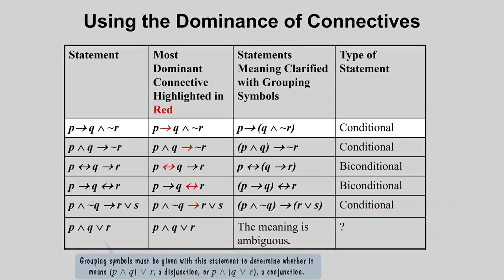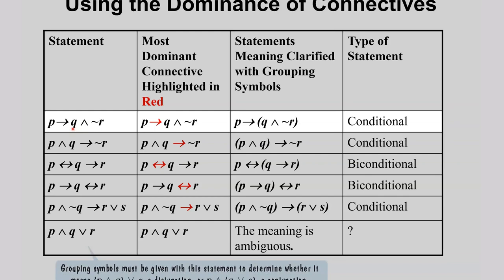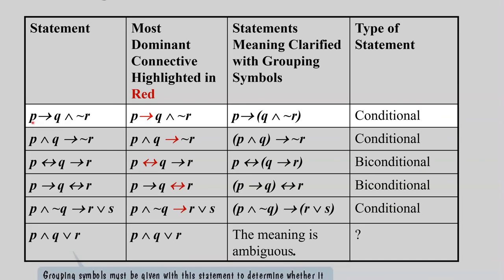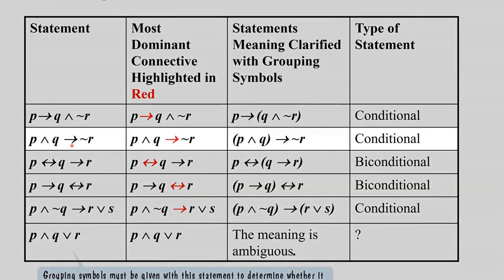For instance, if you see a statement with a negation and a conditional, the most dominant connective is the conditional. So you group the statements on either side of it accordingly. Similarly in another example, the most dominant is again the conditional statement, so those statements will be grouped together.